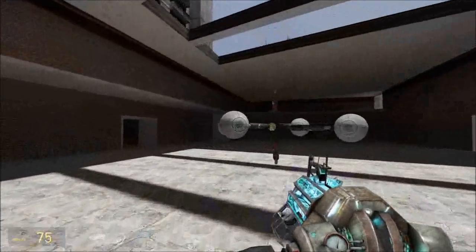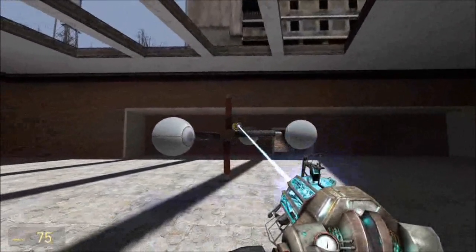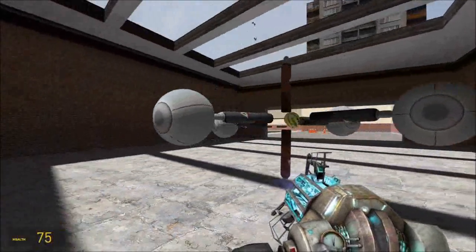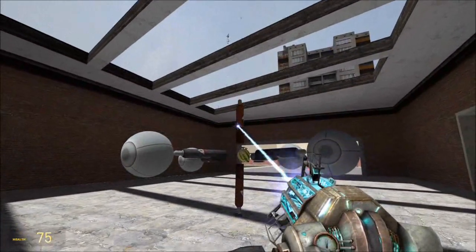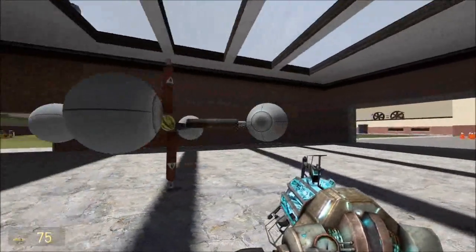All right then, so this final one is square planar, xenon tetrafluoride. That's the xenon in the middle. The pipes represent the bonds on the equatorial, and these are axial ones. Those are the lone pairs. So square planar.